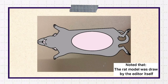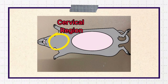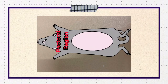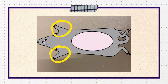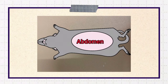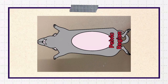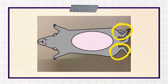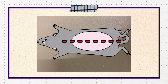First, the rat was placed on the dissecting tray. We can see there is the cranial region or head, cervical region or neck, pectoral region which is the area where the front legs attach, thoracic region which is the chest area, abdomen or belly, and pelvic region which is the area where the back legs attach.